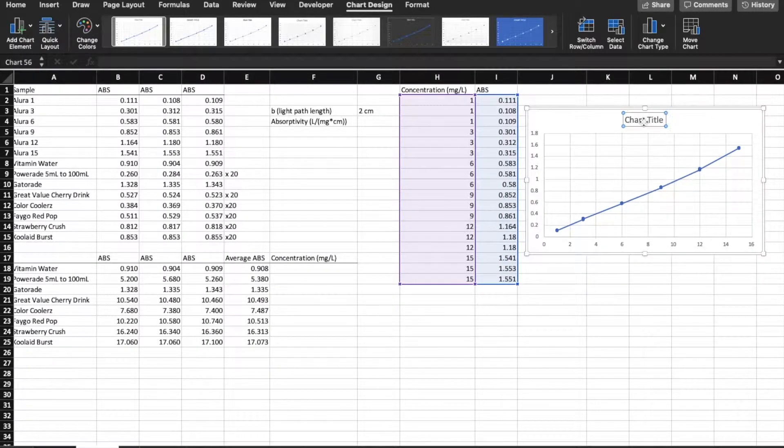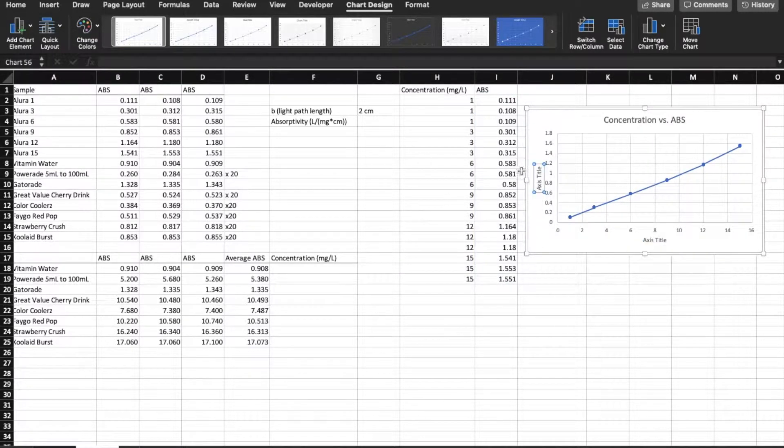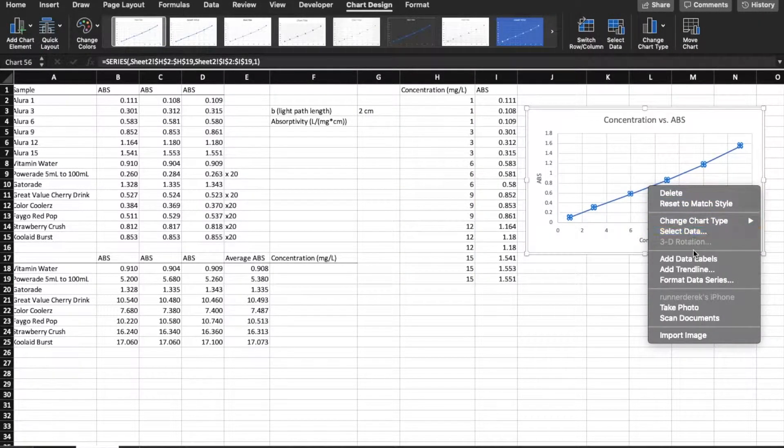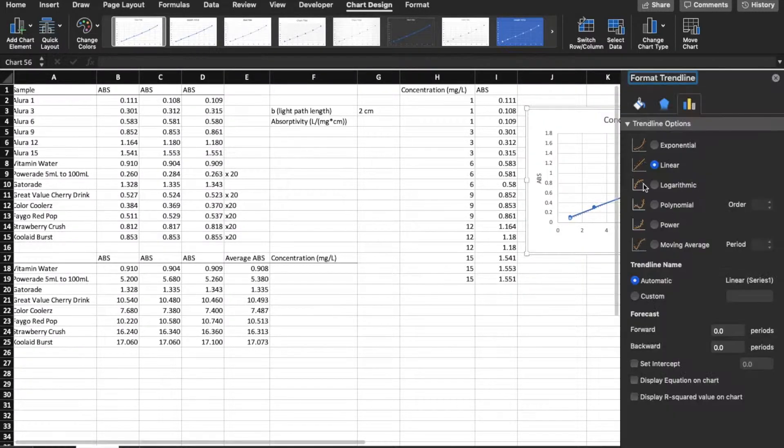This is going to be concentration versus absorbance. So we're going to have concentration on the x-axis and absorbance on the y-axis. I'm going to add the axis titles and change those to what they are supposed to be. I'm going to go ahead and click on the data. I'm going to add a trend line. That's at the right click. Click add trend line.